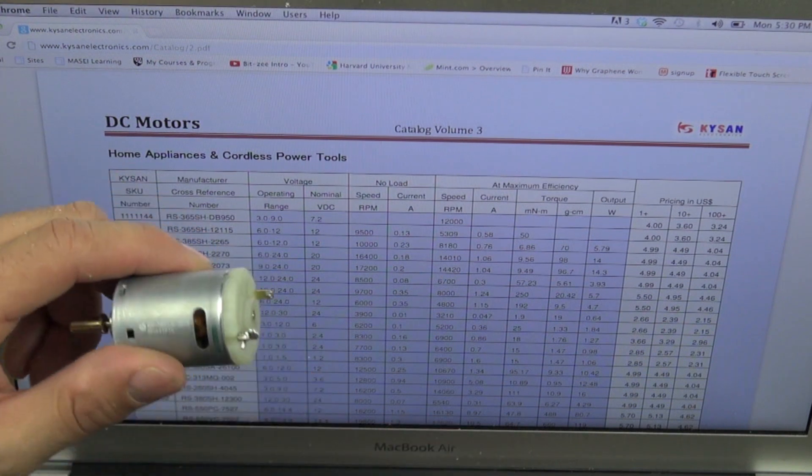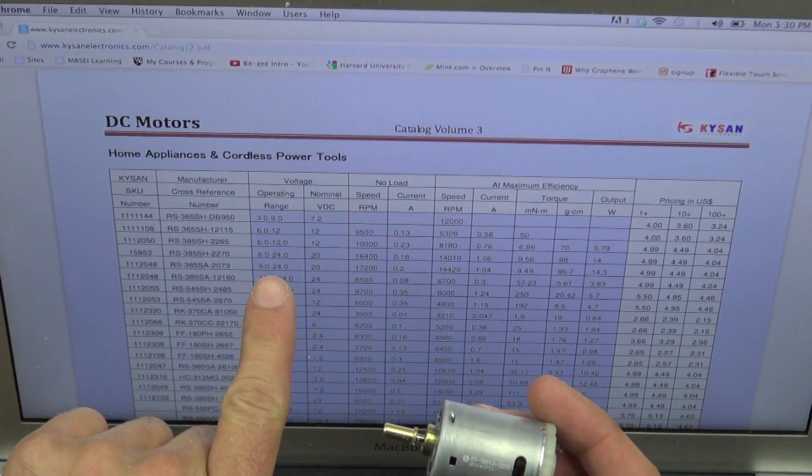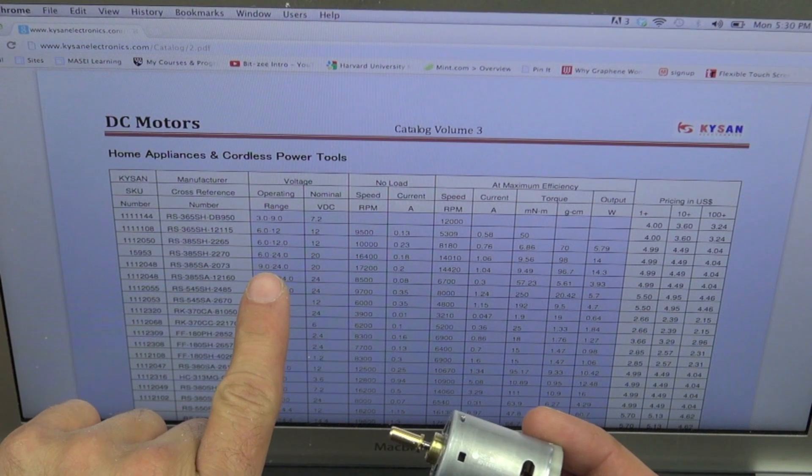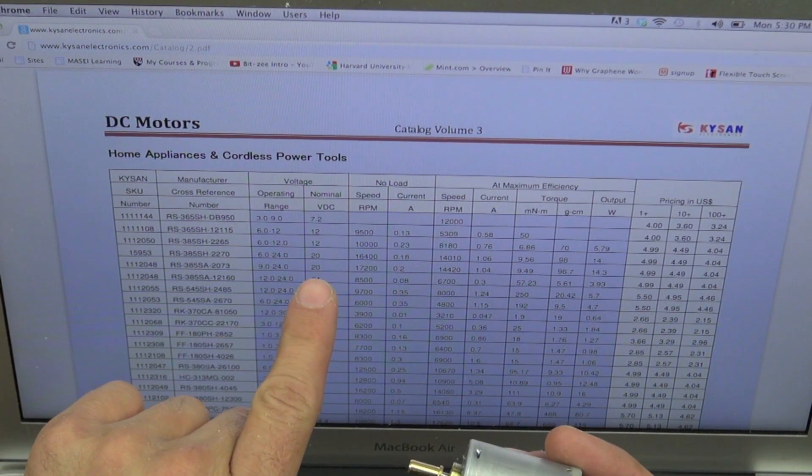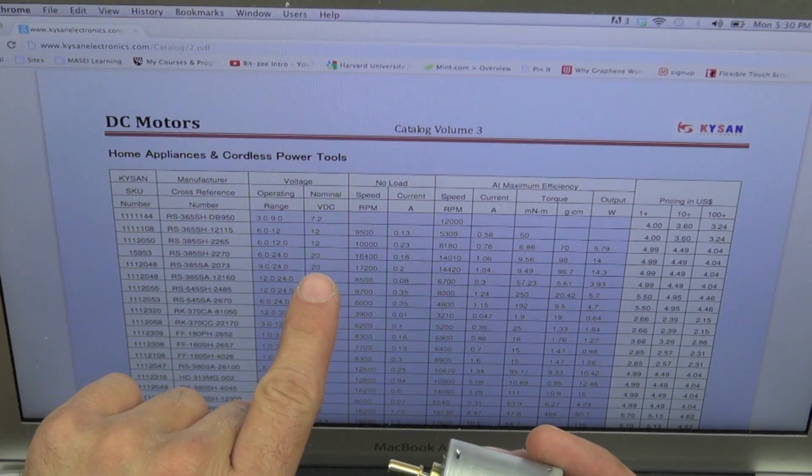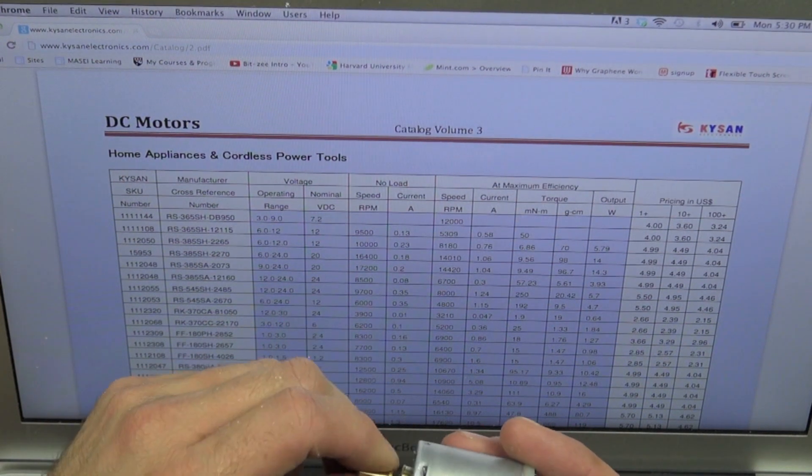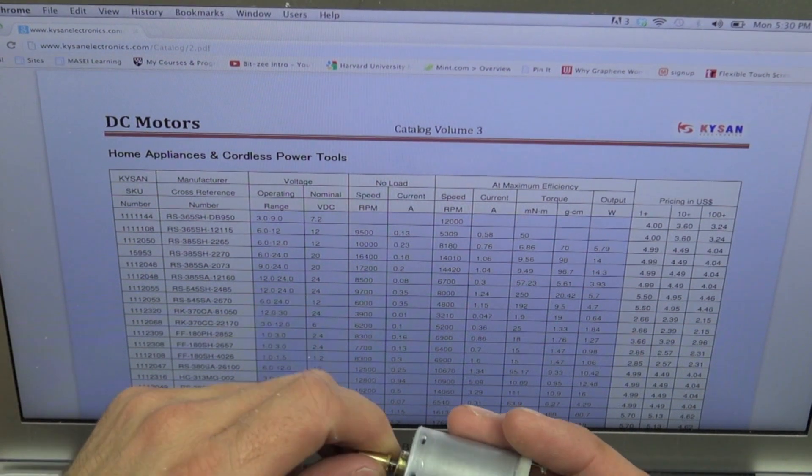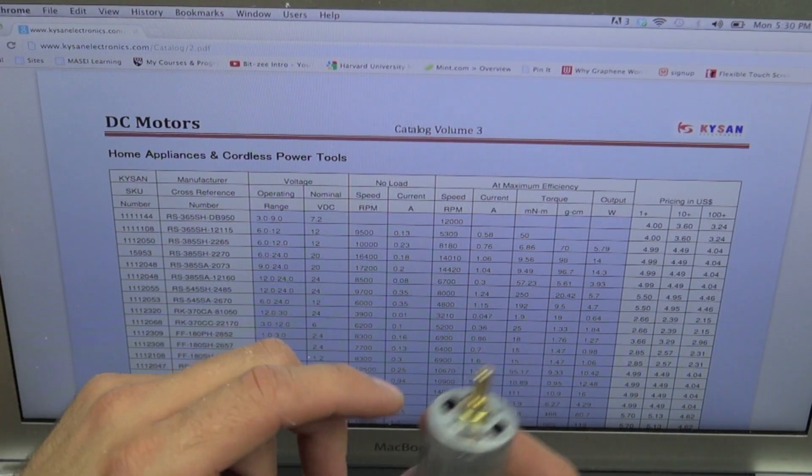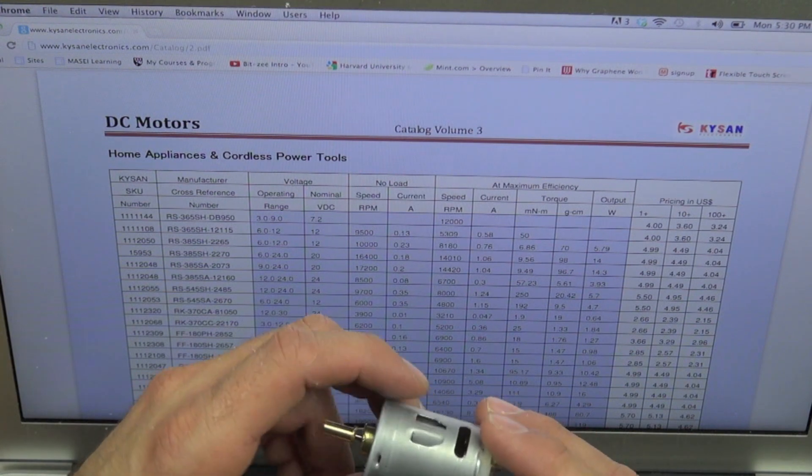Because we know we can run it between 9 and 24 volts, I think we're going to try and run it at a higher voltage than 9 volts because its optimal operating voltage is 20 volts. So we're going to try and run it a little higher than that. I think we're going to go for 12 volts. So let's see what's inside it and see how it works.